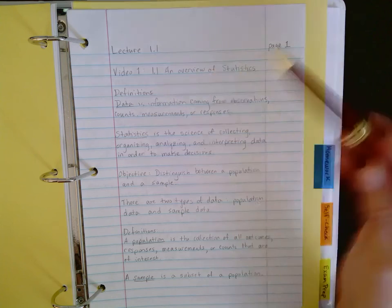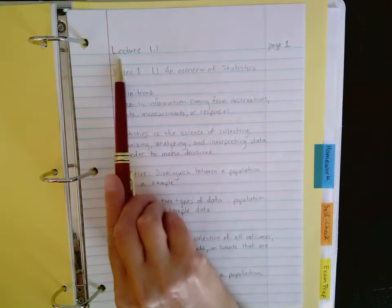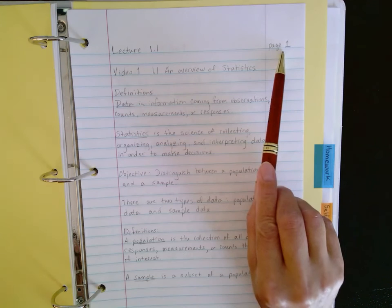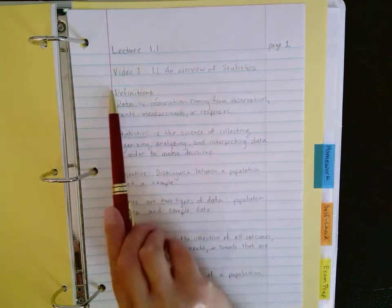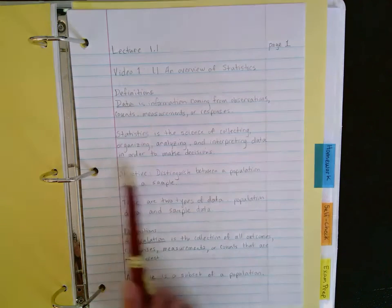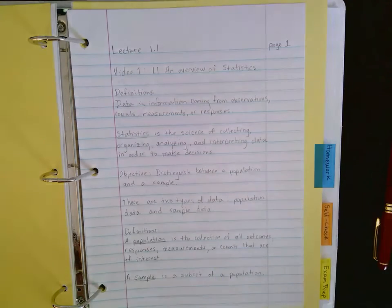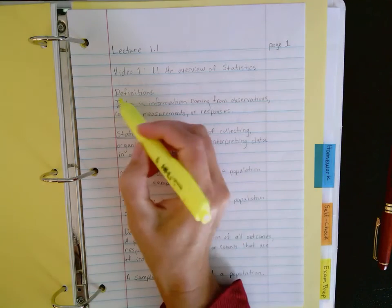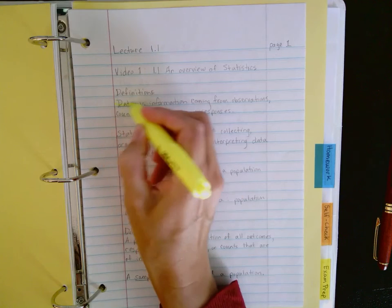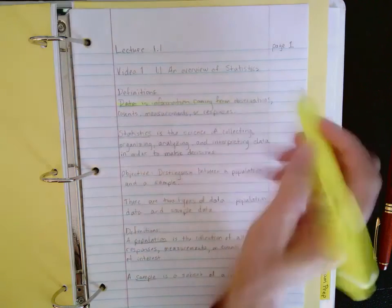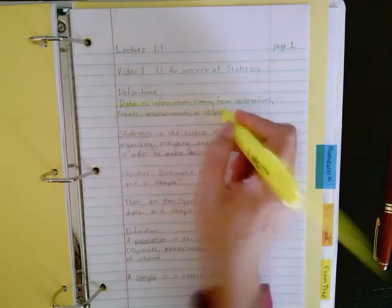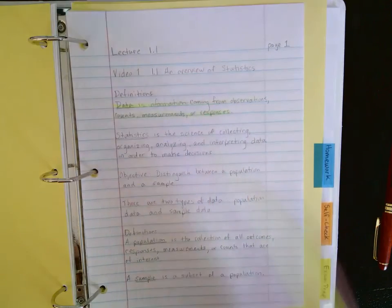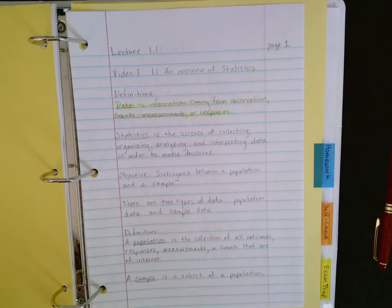So you can see here I've got things labeled that this was from lecture 1.1. I've got it listed as page one. And you can see there are spaces in between the definitions. Now sometimes people like to go ahead and put highlighting for definitions and that's fine. So you can always use highlighters and things that will help you to read what you've written.